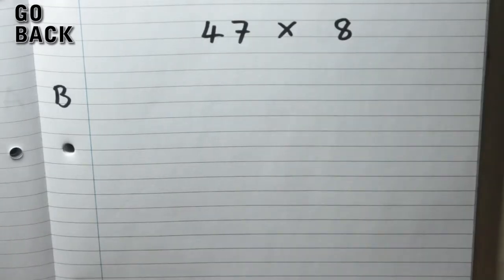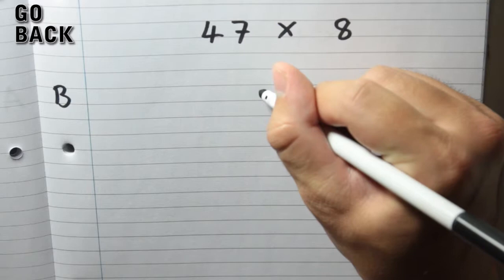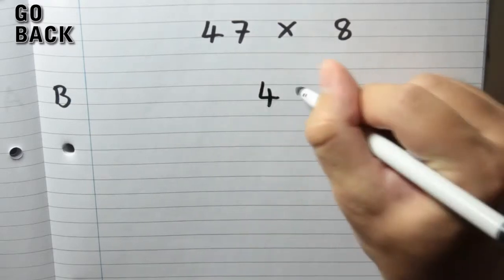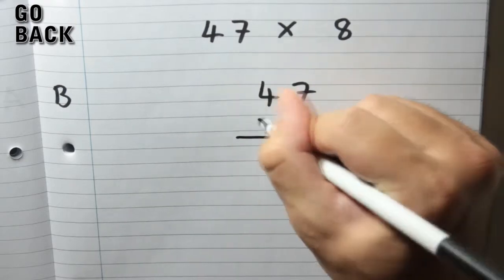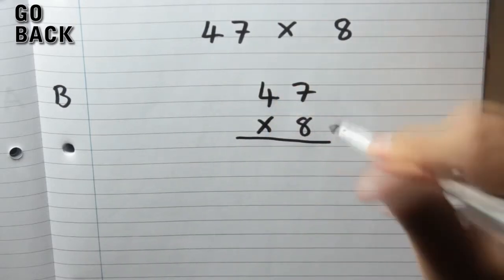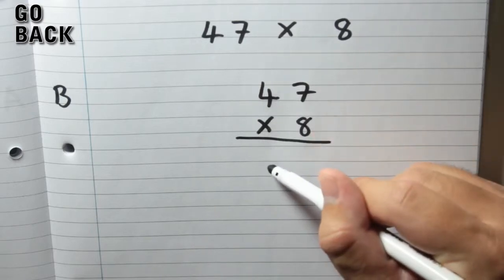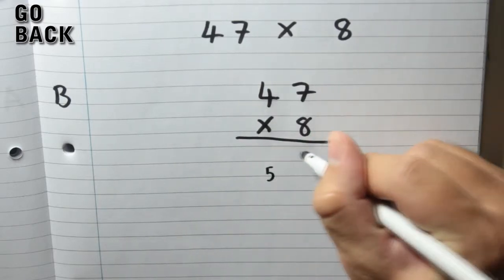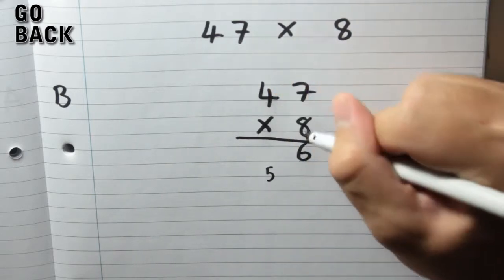Question B: 47 times 8 will require some carrying. So I'll put the 47 on top and the 8 underneath, put a line. So 7 times 8 is 56, so the 5 goes underneath the 10s column, here, and the 6 goes there.